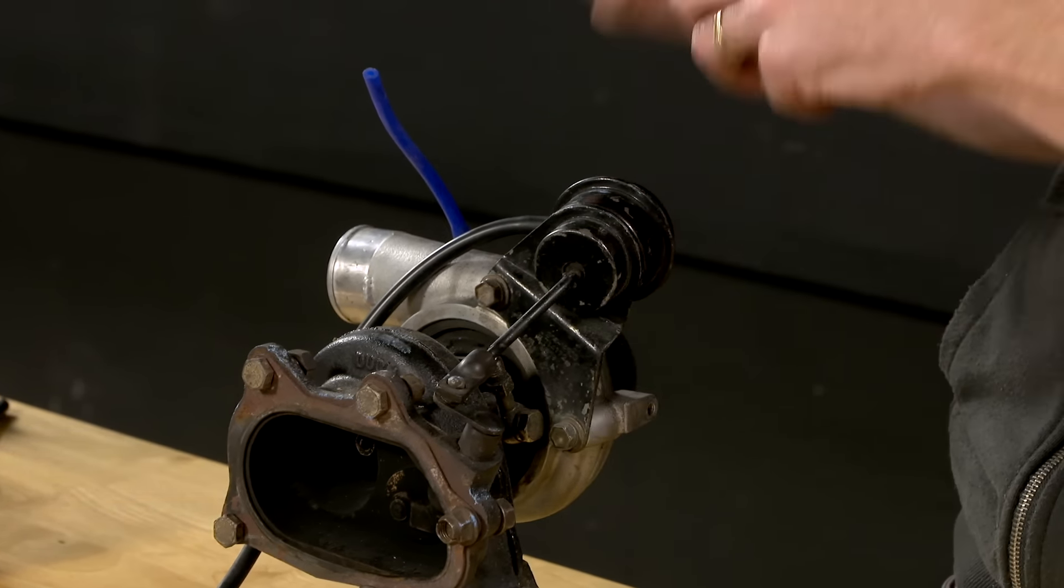So the wastegate is actually split into two parts because we're talking about an internal wastegate here. We've got the flap and then we've got the actuator. Now the actuator's job is actually to move the flap in the right position.